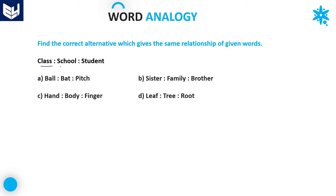See this question: class, school, and student. Student is a part of class, and class belongs to school. Now in the similar fashion, looking at the options: finger is a part of hand, and hand belongs to body. So the third one is a part of the first one, and the first one belongs to the second one — that is the logic. In examination, you have to be very careful by checking each and every option. Option C is the right answer for this question.